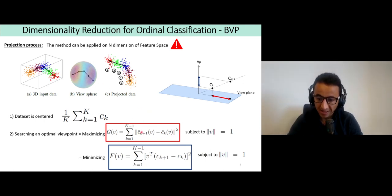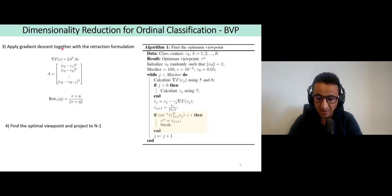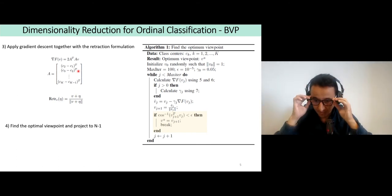To find this viewpoint, a gradient descent together with the retraction formulation is computed. The retraction is for selecting only viewpoints that are on the surface of the viewpoint. First we initialize a viewpoint and we initialize also the learning rate and the threshold.